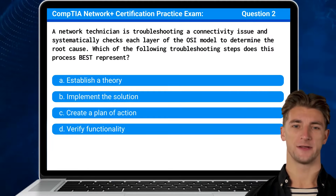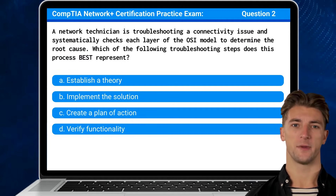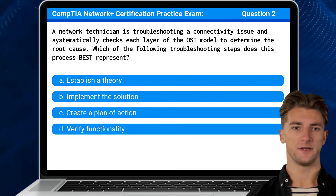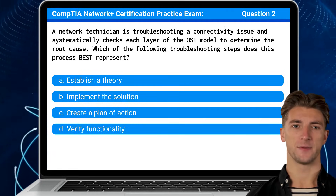Question 2. A network technician is troubleshooting a connectivity issue and systematically checks each layer of the OSI model to determine the root cause. Which of the following troubleshooting steps does this process best represent?